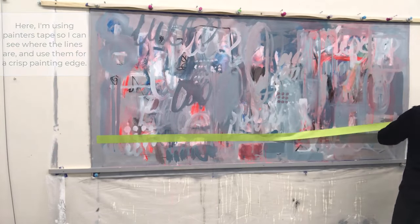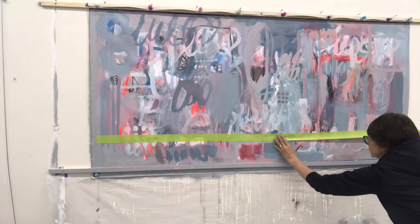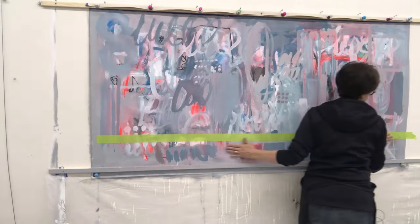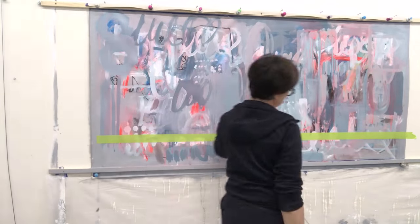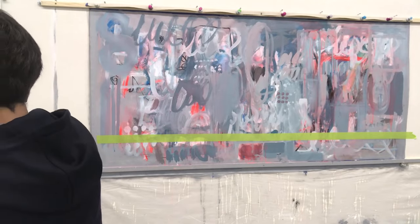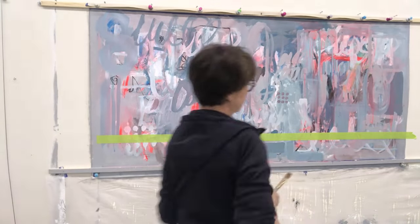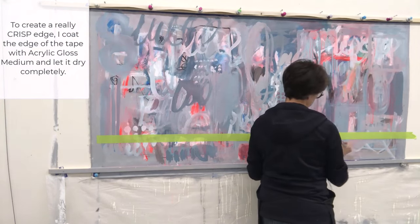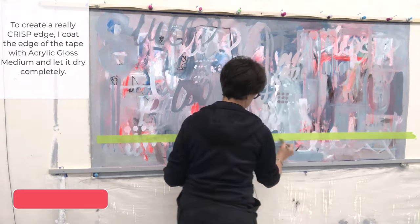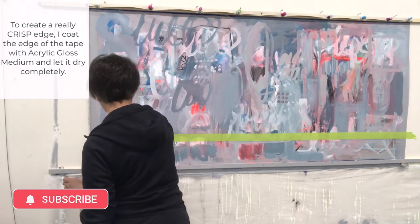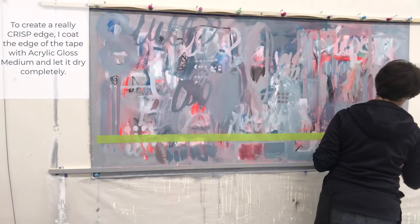One way to do that when you're using tape is you apply it and then over the edges, you want to apply a little bit of gloss medium. This is the part where I'm adding the gloss medium and you want to let it completely dry. But then when you paint over the tape and remove it, it's going to give you a really nice crisp edge, and you'll see that happen later on in this video.